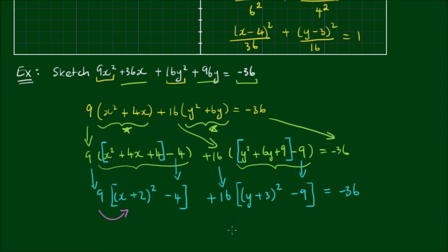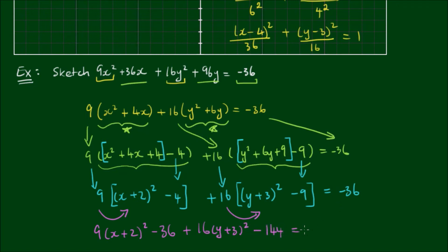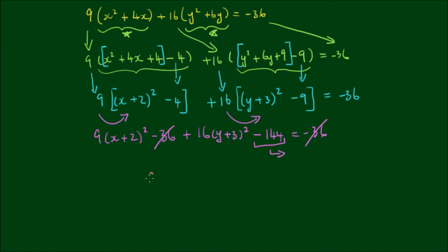The 9 is multiplied into the first set of brackets and the 16 into the second. This gives 9 times x plus 2 all squared minus 36, plus 16 times y plus 3 all squared minus 144, equals negative 36. The negative 36 on the left and right cancel, and the negative 144 is moved to the right, giving 9 times x plus 2 all squared plus 16 times y plus 3 all squared equals 144.